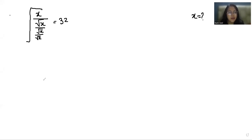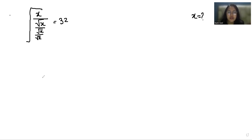Hello everyone, welcome to my channel. My name is Rashi Goyal and in this video we are going to solve: the square root of x divided by the square root of x divided by the square root of x divided by the square root of x, equals 32. We have to find x. So let's start with today's video solution.